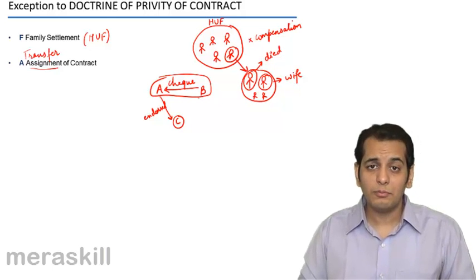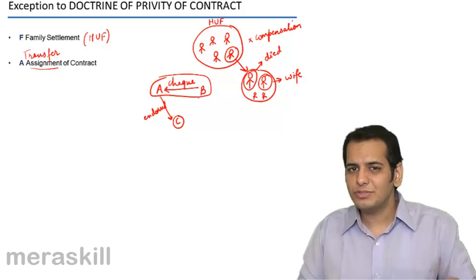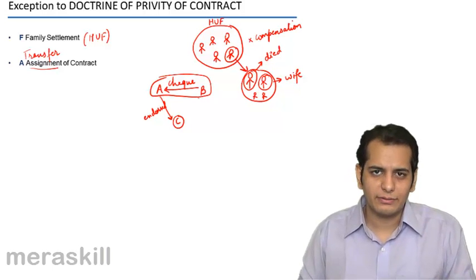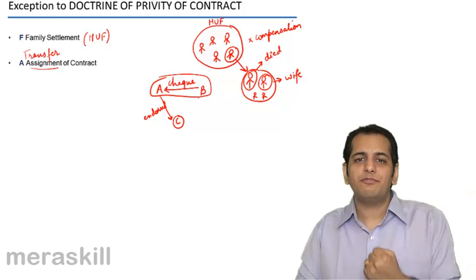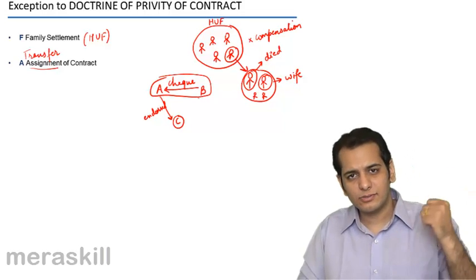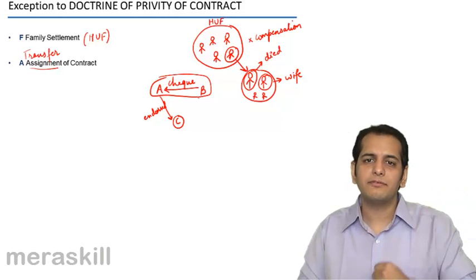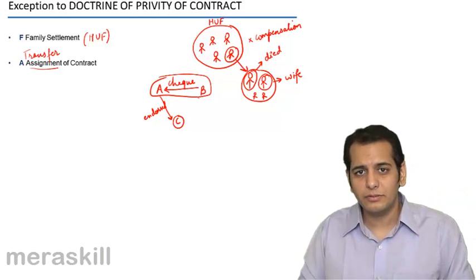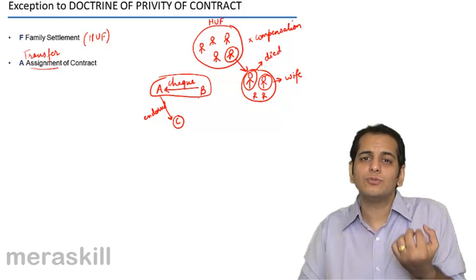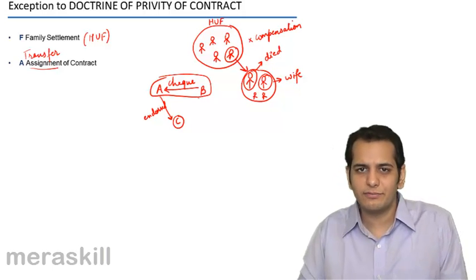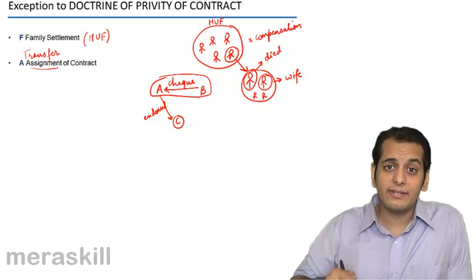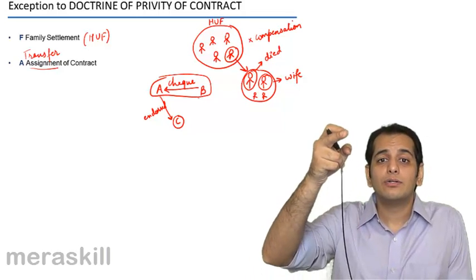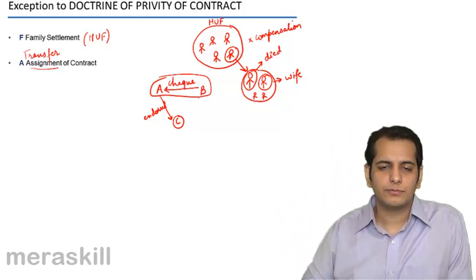C says, 'You have a right of privity of contract, correct. However, I am a beneficiary in the contract. A has assigned his benefit to me, A has transferred the benefit to me. So now I am the person who is supposed to receive the benefit — I am the beneficiary — so I get the right to claim it from you.'